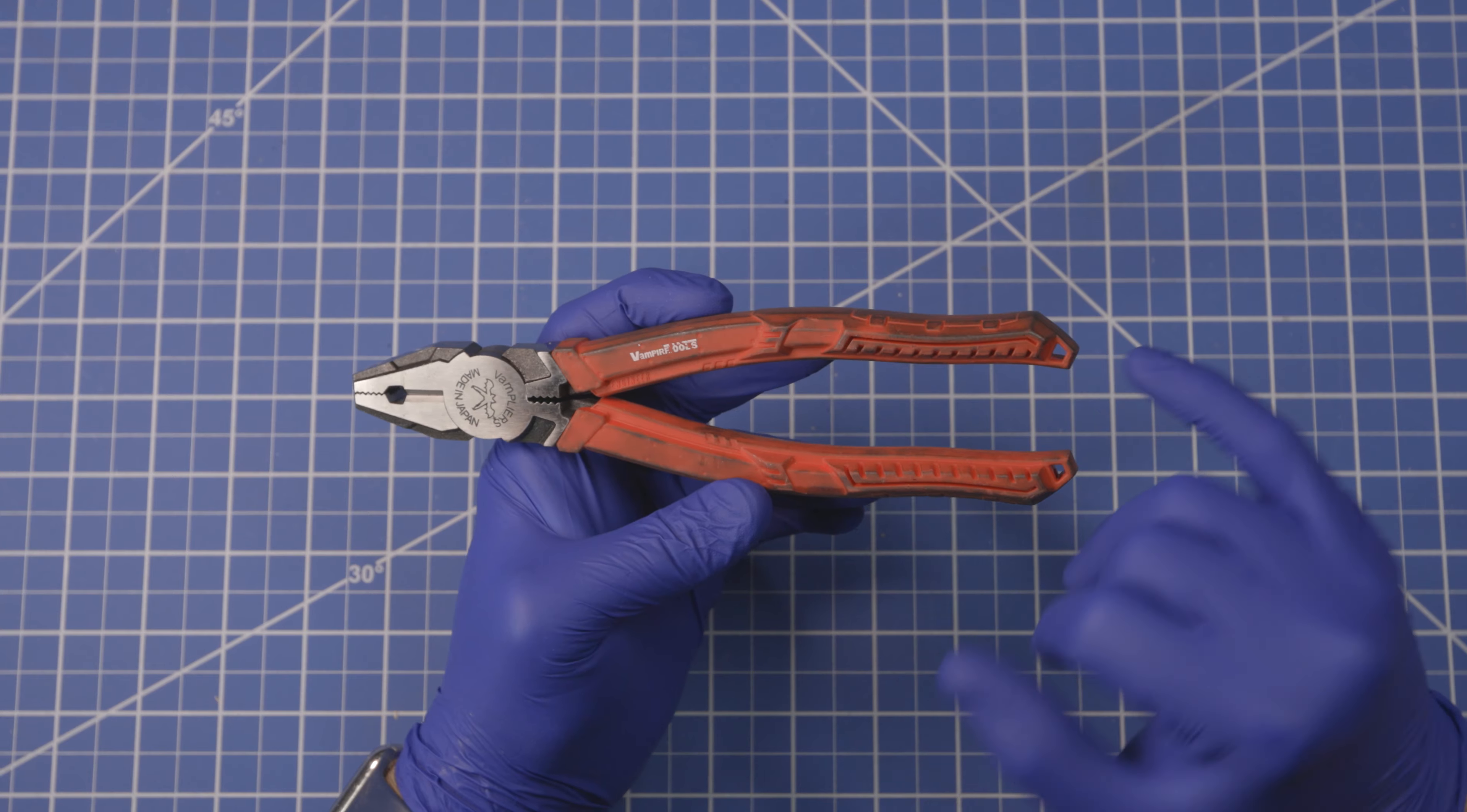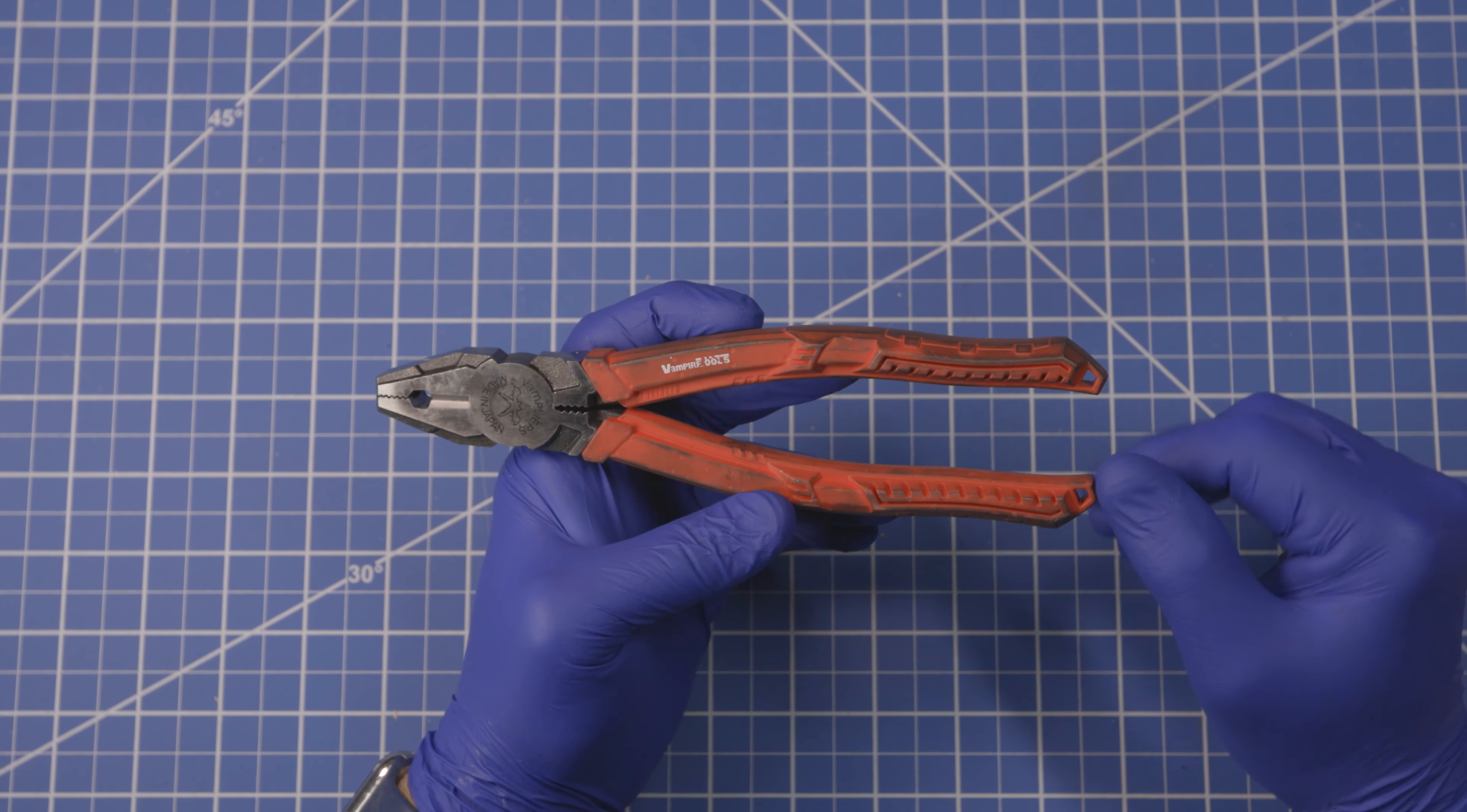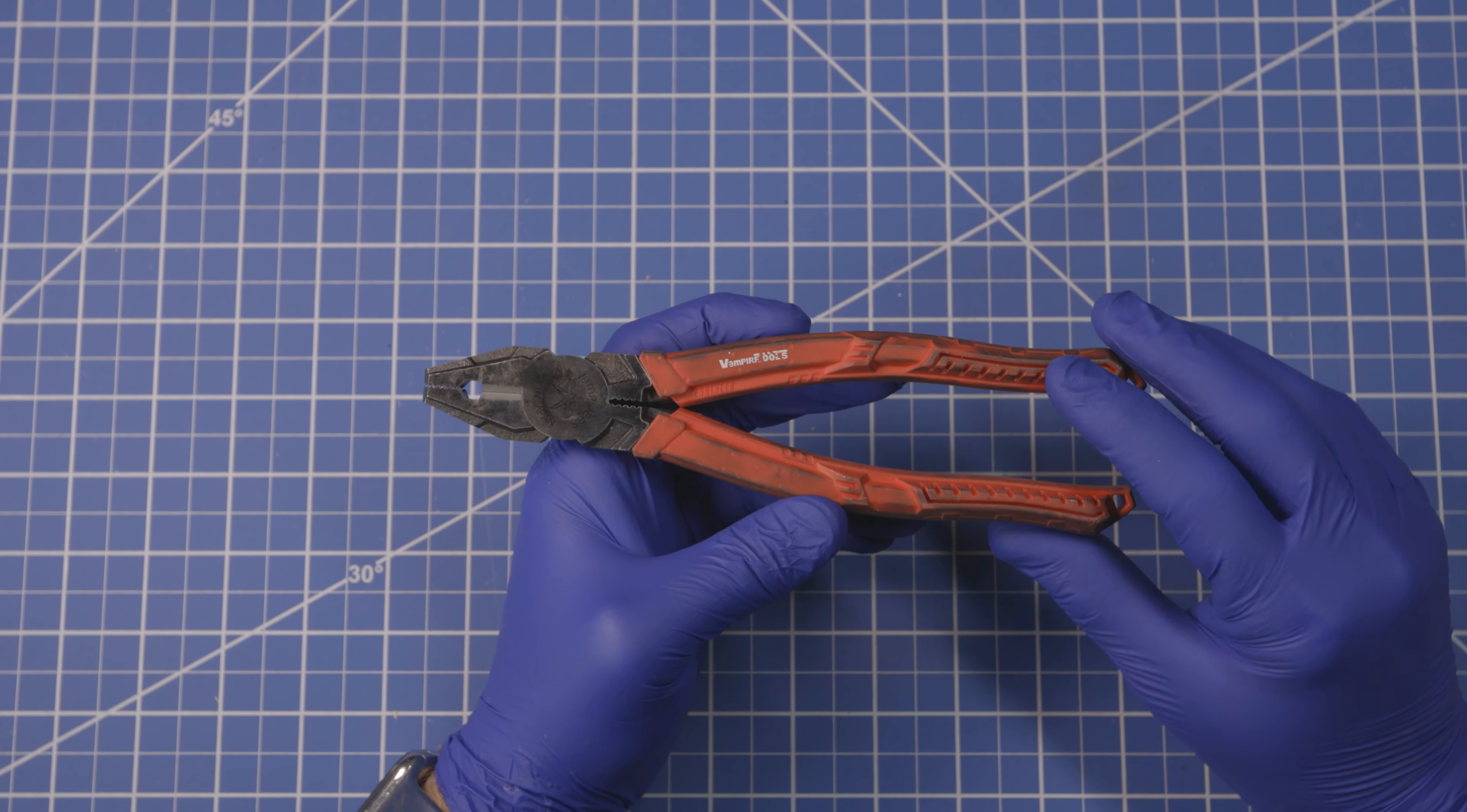These do have little leash holes, but this is only in the rubber, so I wouldn't personally use these as leash holes because they're going to rip out. But you do what makes you happiest with your pliers.